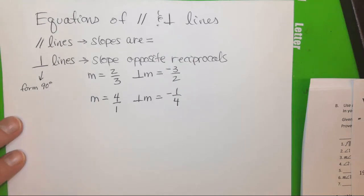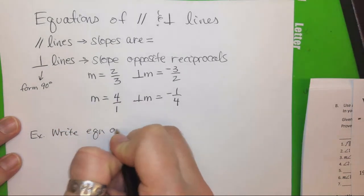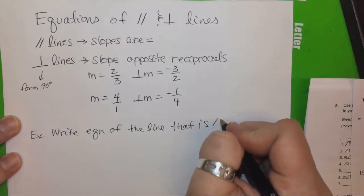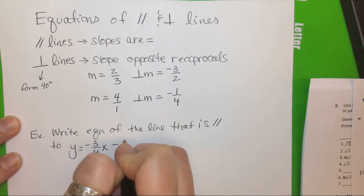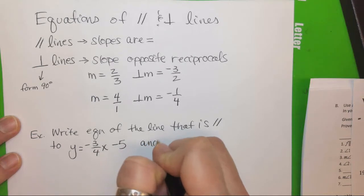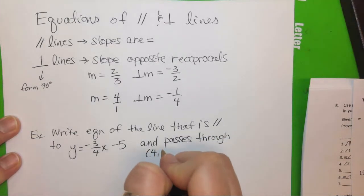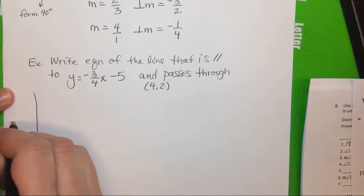Let's start with an example. We want to write the equation of the line that is parallel to y equals negative three-fourths x minus five and passes through four-two. Everybody, this is the first one on page two that you probably worked with last night. Now, with this, let's think about what that picture looks like.